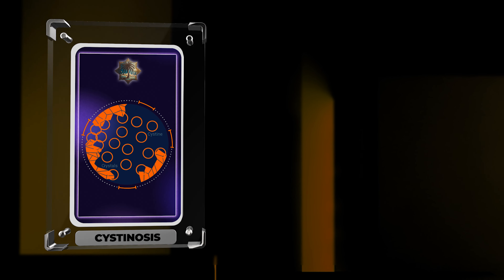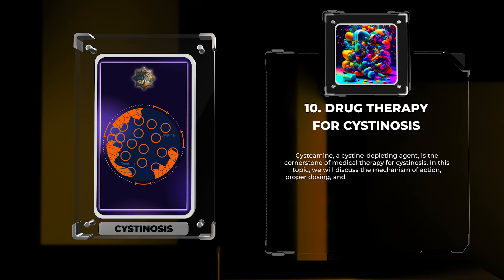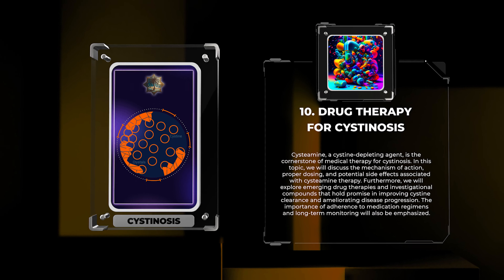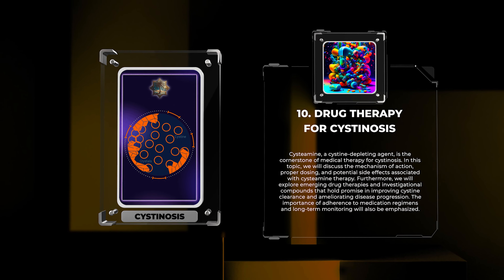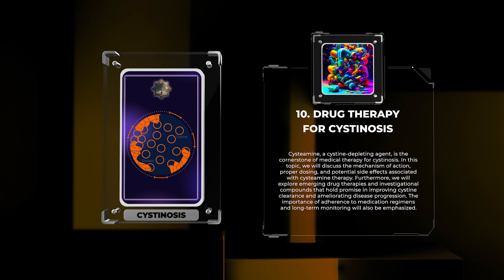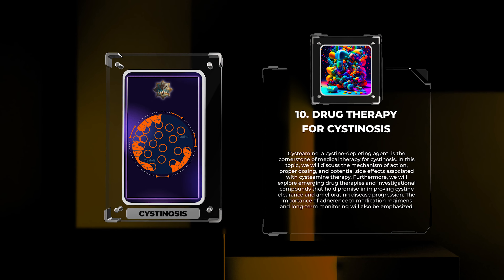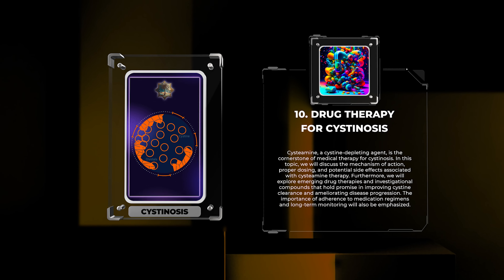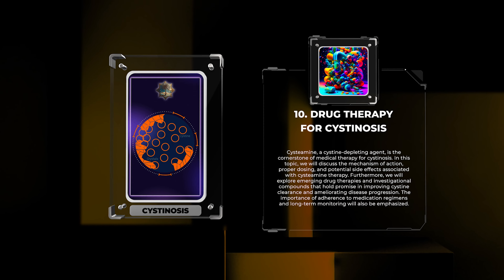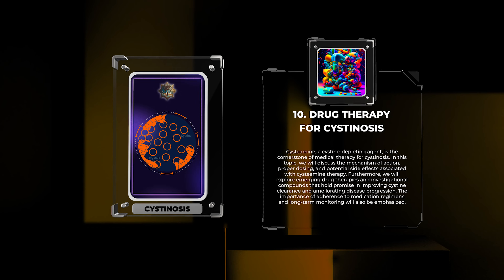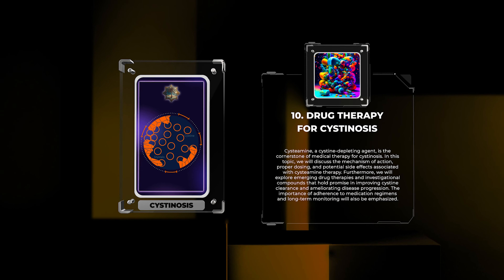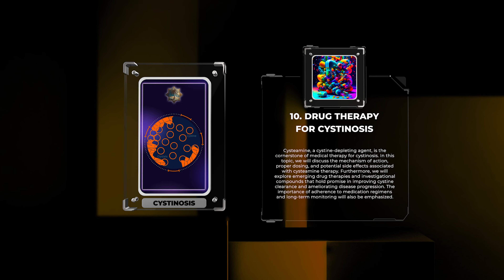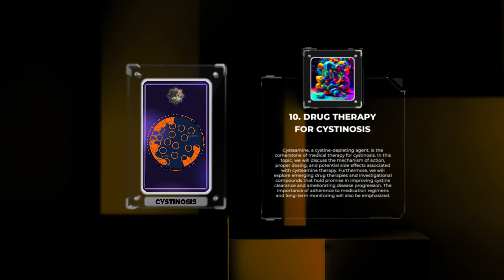Cysteamine, a cysteine-depleting agent, is the cornerstone of medical therapy for Cystenosis. In this topic, we will discuss the mechanism of action, proper dosing, and potential side effects associated with Cysteamine therapy. Furthermore, we will explore emerging drug therapies and investigational compounds that hold promise in improving cysteine clearance and ameliorating disease progression. The importance of adherence to medication regimens and long-term monitoring will also be emphasized.